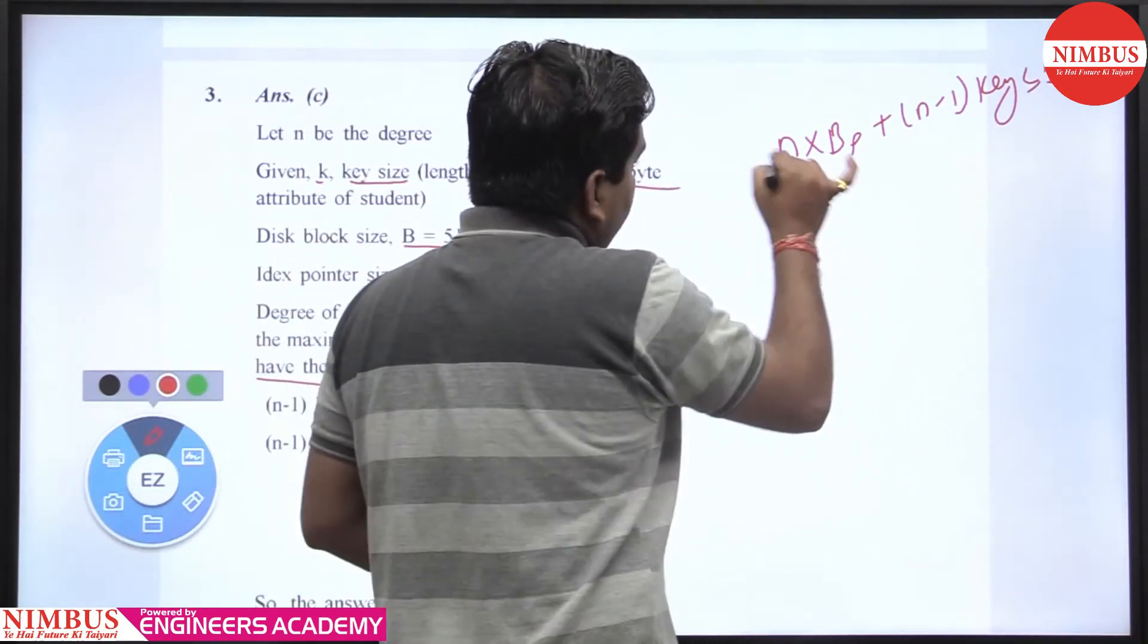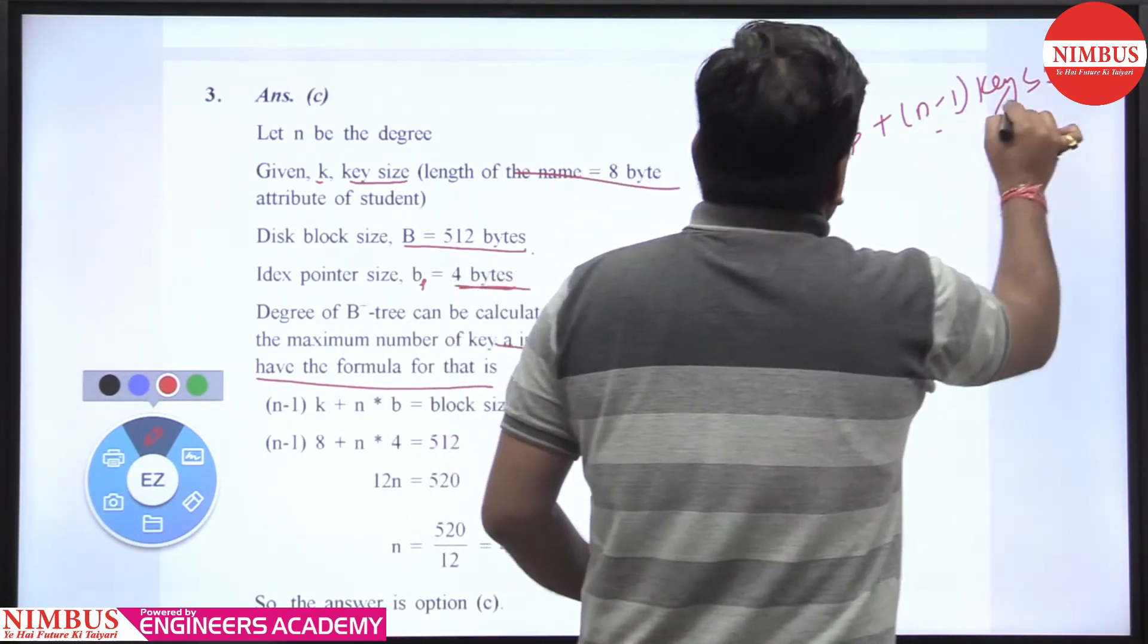Internal nodes have only n block pointers and n minus 1 keys.